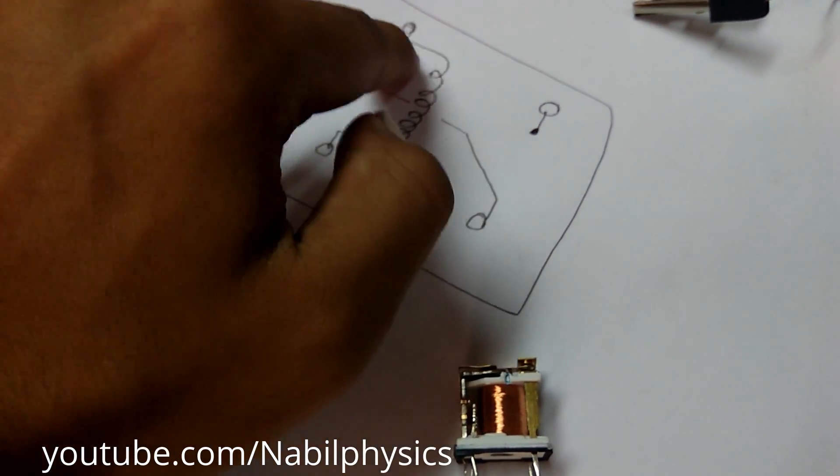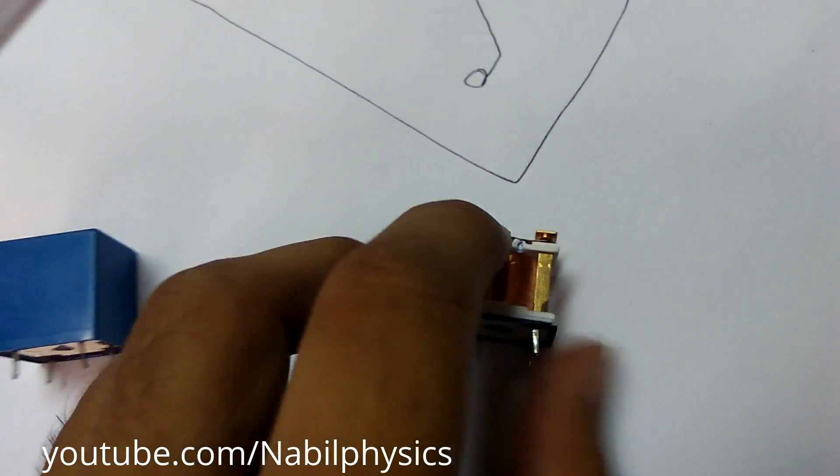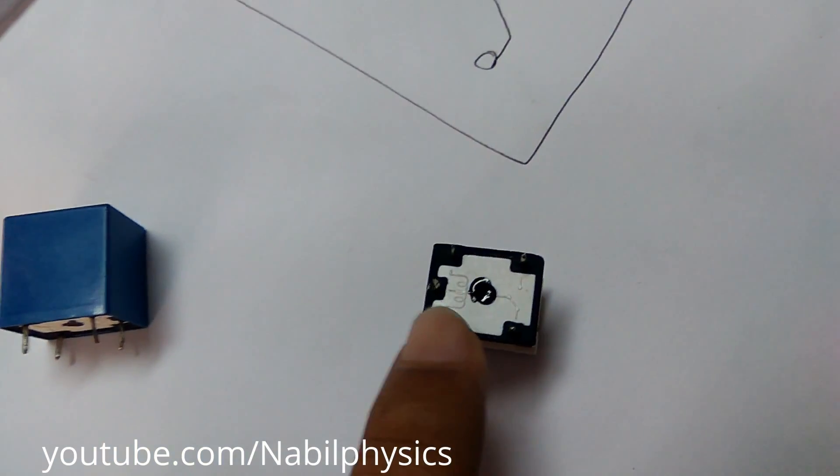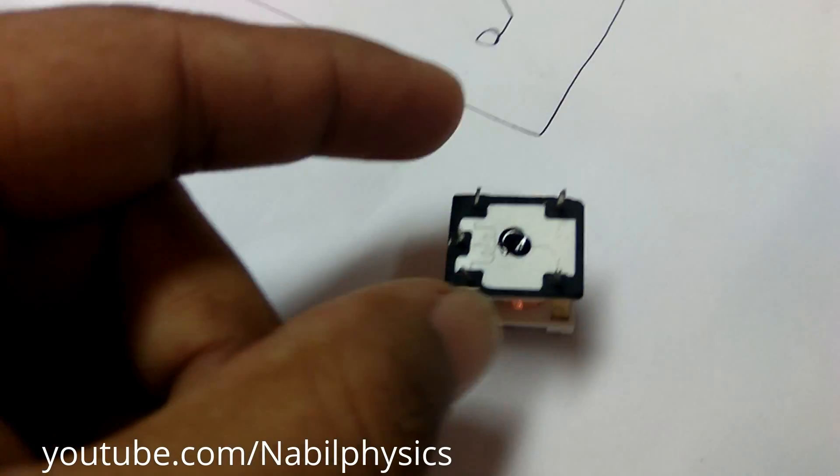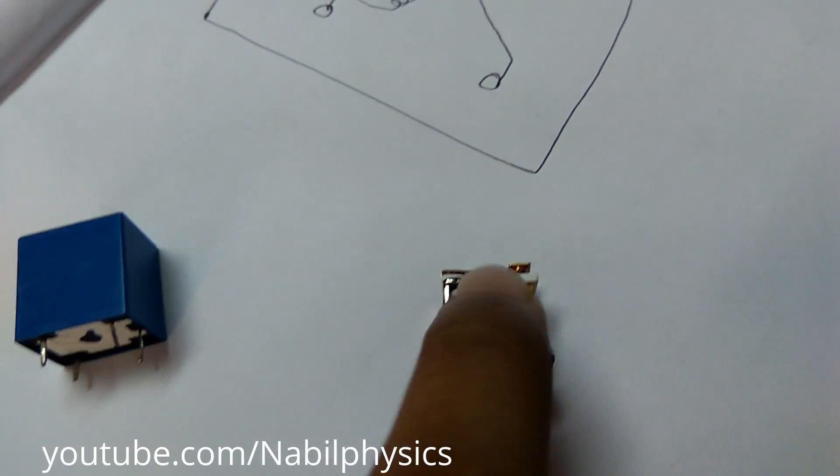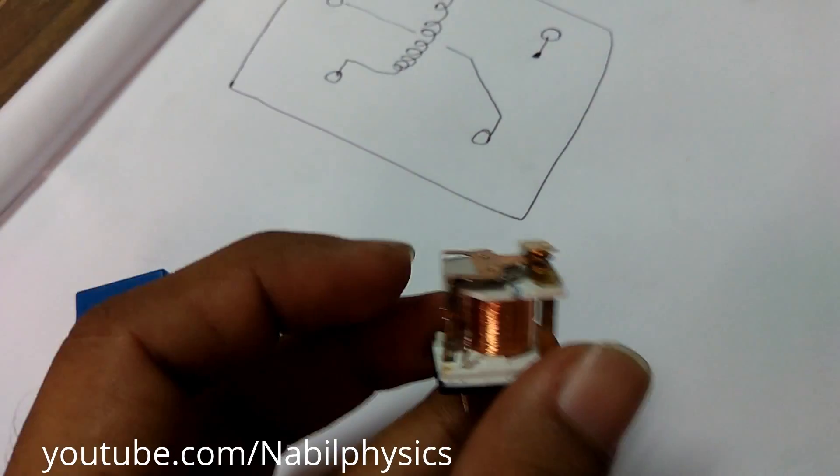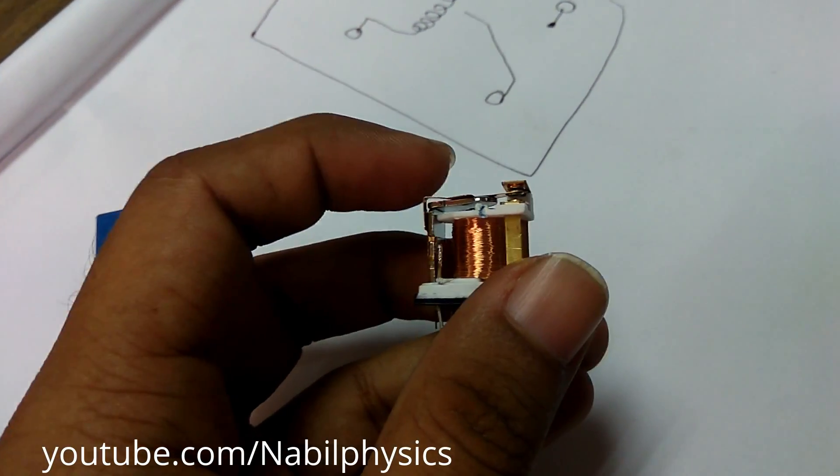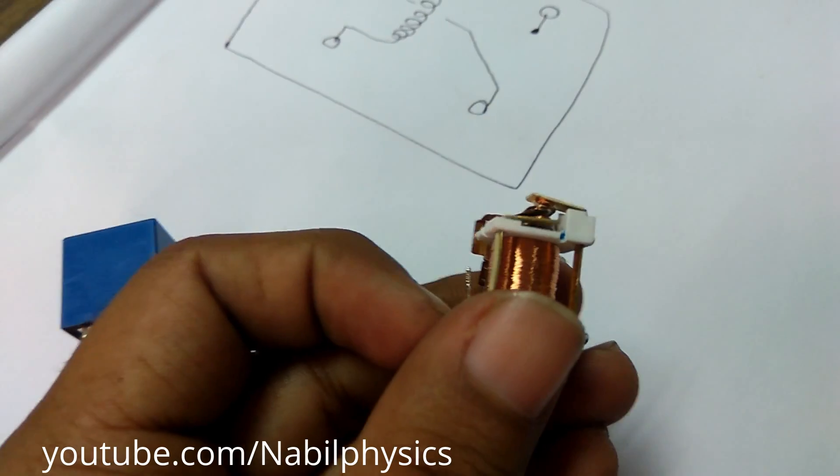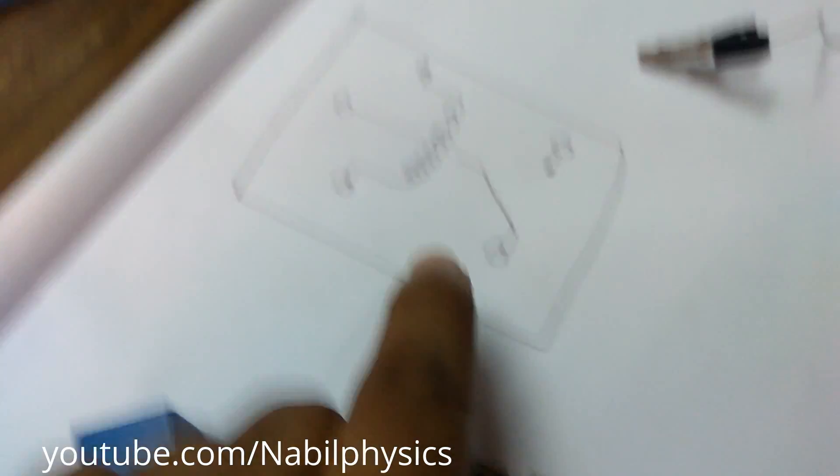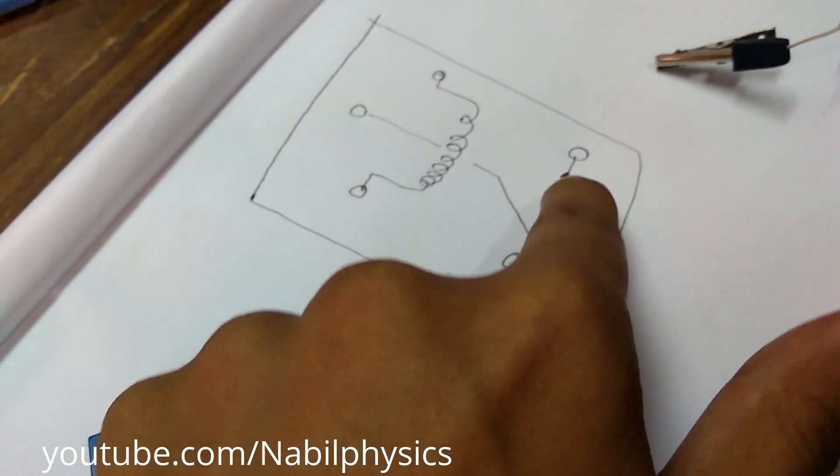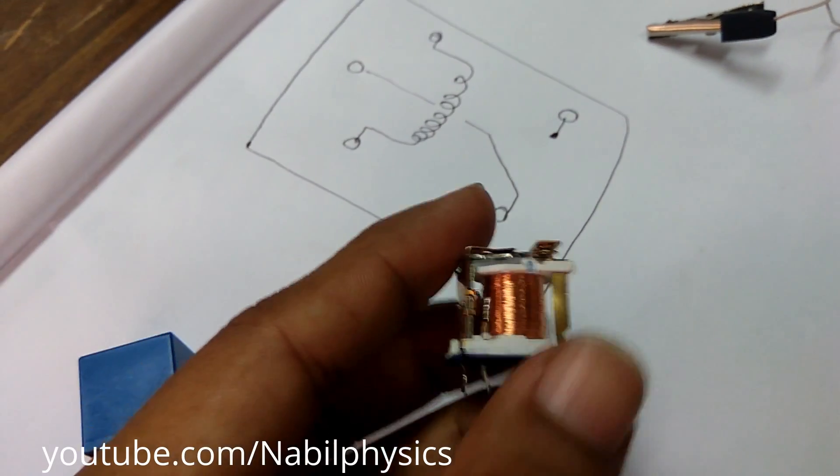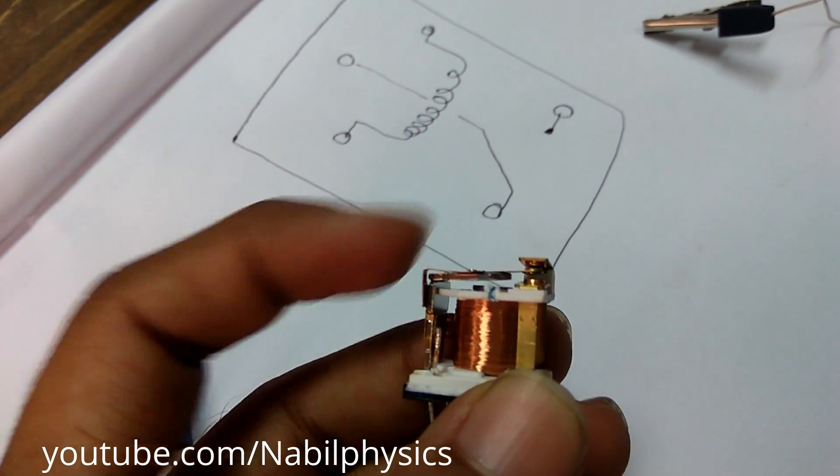So here you can see this is a coil. These two pins are connected with this electromagnet and this is a common pin. By default it is connected with this upper side which is this pin, and the other pin is here.